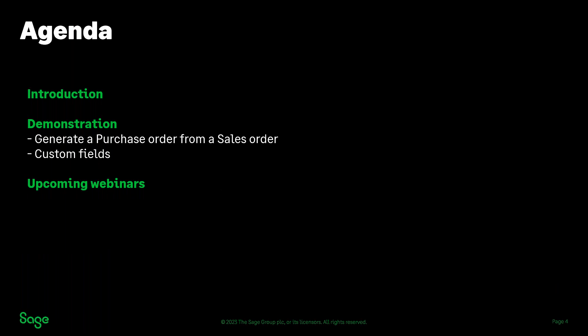So this is the agenda for today. We're going to start by introducing the session and the benefits of generating purchase orders from sales orders. I'll then demonstrate how to generate a purchase order from a sales order — there are two ways of doing it, so I'll show you both. If we've got time, I'll also show you how to customize your fields on purchase orders and sales orders. At the end I'll summarize the session and talk about upcoming webinars. Please keep your questions coming throughout — either me, Jackie, or Michael can pick those up.